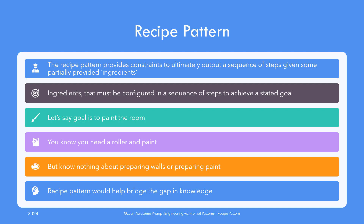So let me try and explain with an example. Say you are trying to paint your room. You have your paint and ruler with you but you don't know anything about preparing the walls or the room or how to paint. You do have an end goal in mind though, so you are going to provide the partial information about what you know and what you have and what you want, and ask for a sequence of steps including any missing steps from the large language model.